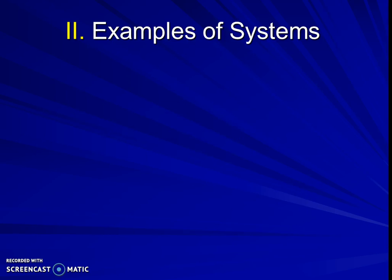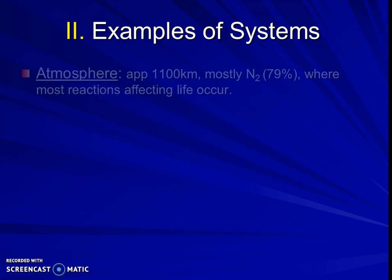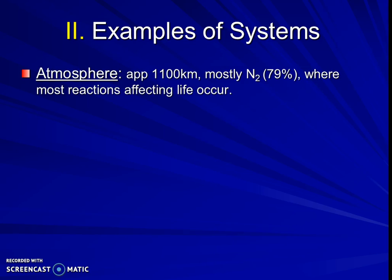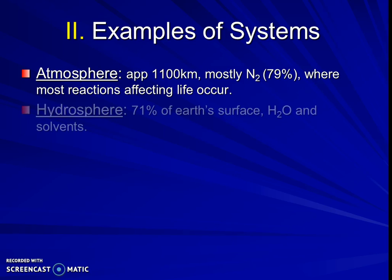Let's talk about some actual environmental examples. You don't have to write everything on this slide, but I do suggest you write down key summaries of each of the different bullets. One system we're going to learn about is the atmospheric system, which is approximately 1,100 kilometers. It is mostly nitrogen gas — which is surprising since we think of it as oxygen — and a lot of our reactions in life occur in that atmospheric system.